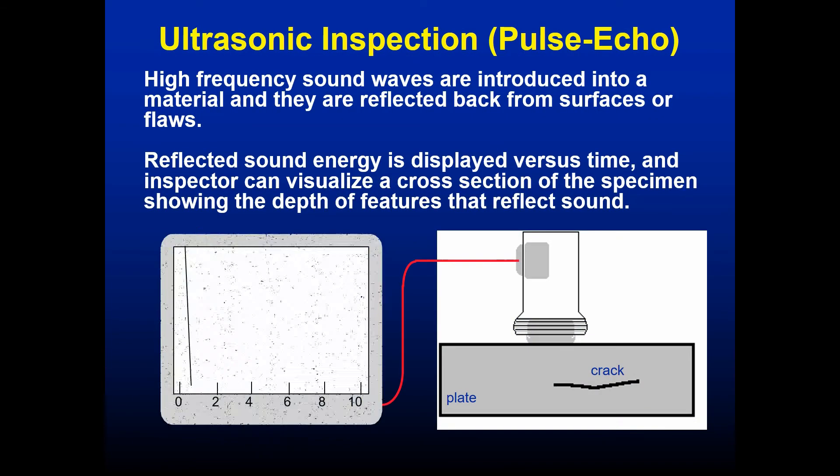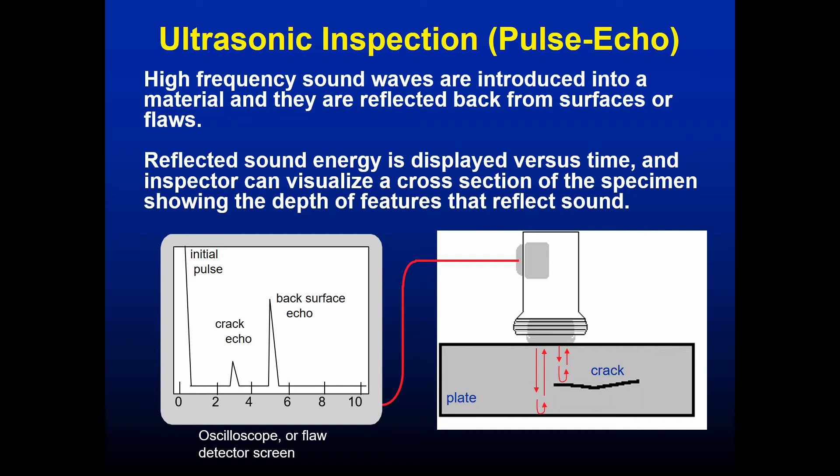Ultrasonic inspection works similarly to medical ultrasound — high-frequency sound waves are shot into a material and reflected back either from the back wall of the material or from an internal crack or damaged area. Based on the time of flight of the echo, the system can determine the thickness of the material. If there's an internal crack, the reflection will appear at a point shorter than the expected thickness.